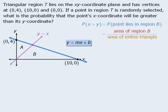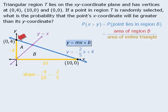We'll write this equation in slope y-intercept form, where M is the slope of the line and B is the y-intercept. First we'll find the slope. The slope will be equal to rise over run. To get from one point to the other, the rise is negative 4 and the run is 10, so the slope is negative 4 over 10, which equals negative 2 fifths. We can see that the y-intercept is 4, so the equation of the blue line is y equals negative 2 fifths x plus 4.